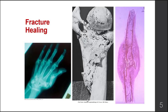The middle image shows a pretty messy callus formation following a bone fracture, which we'll talk about a little later. The final image shows lack of alignment and how it changes the overall integrity of the bone.